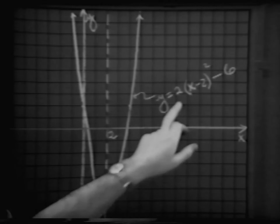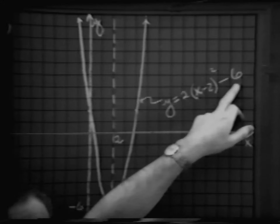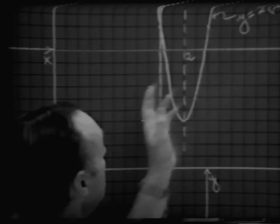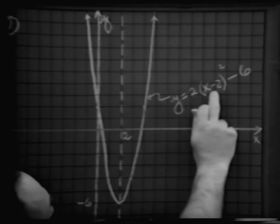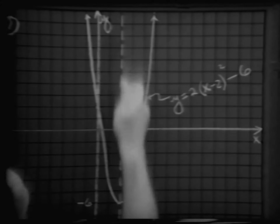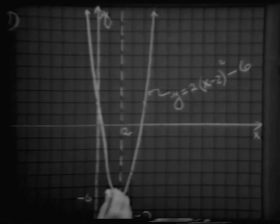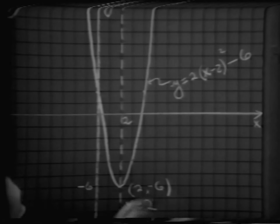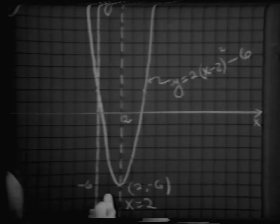In the next picture, example number 7, let's throw all three ideas into one example in which we have a coefficient a which is 2, a number h which is also 2, and a number k which is negative 6. Each one of these numbers contributes some aspect to the graph. The number 2 makes it concave up and somewhat narrow. x equals 2 is its axis of symmetry. The number negative 6 translates the graph downward 6 units. Our vertex point is 2 comma negative 6, the graph is concave up and somewhat narrow.